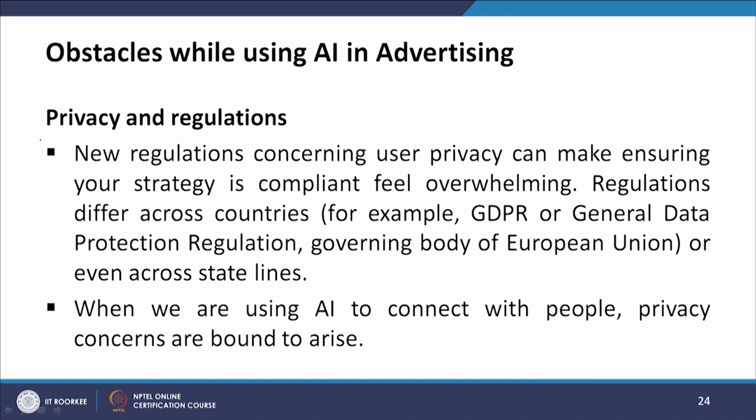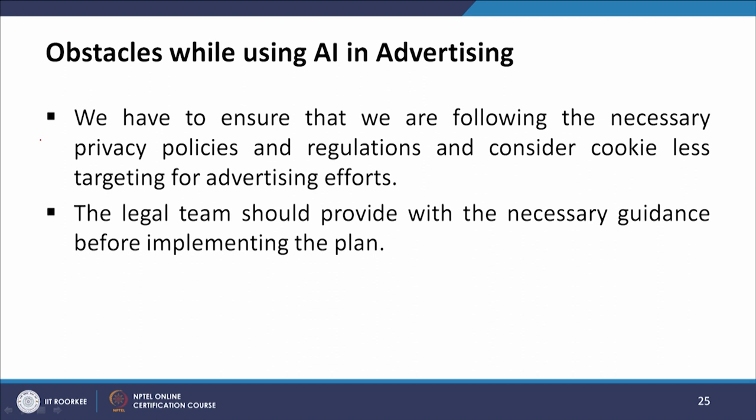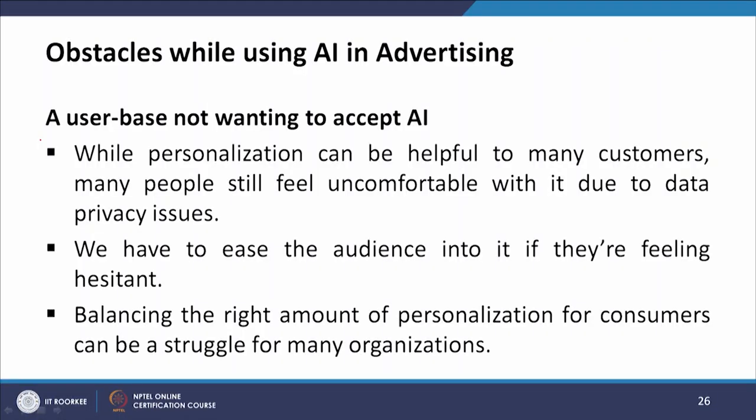Yet another obstacle is privacy and regulations. New regulations concerning user privacy can make ensuring your strategy is compliant feel overwhelming. Regulations differ across countries — for example, the General Data Protection Regulation governing the European Union — or even across state lines. When using AI to connect with people, privacy concerns are bound to arise. We have to ensure we are following necessary privacy policies and regulations and consider cookie-less targeting for advertising efforts. The legal team should provide necessary guidance before implementing the plan.